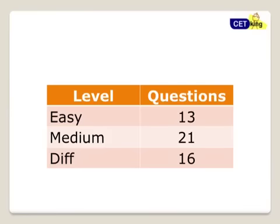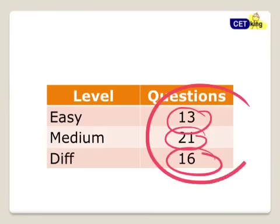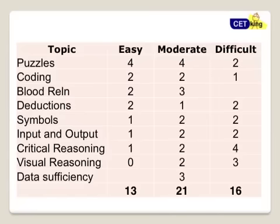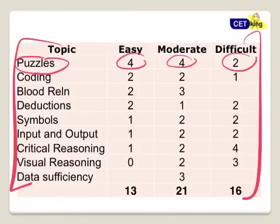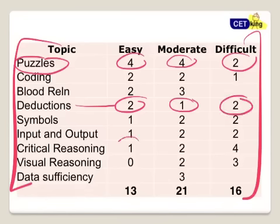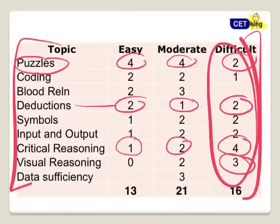Thirteen easy, twenty-one medium, sixteen difficult — so this section was a little bit on the higher side in terms of difficulty, and that's why the cutoff is also a little high from this section. This slide gives a break up of each topic: logical puzzles out of ten questions — four easy, four medium, two difficult. Deductions — two easy, one medium, two difficult. Critical reasoning — one easy, two medium, four difficult. Visual reasoning — three difficult. So these are the areas where we have to focus on.